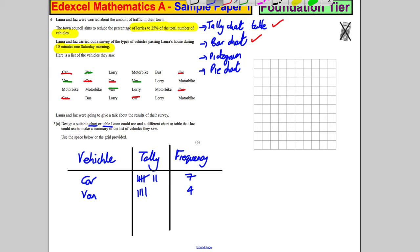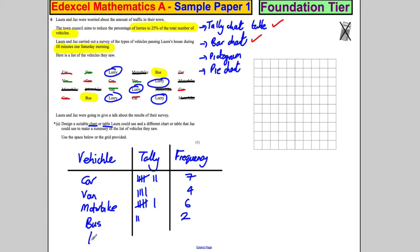We've got motorbike. So we've got one motorbike, two motorbikes, three motorbikes, four motorbikes, five motorbikes, six motorbikes. We've got six motorbikes. So one, two, three, four, five, six. And we've got a bus. So we've got one bus, two buses. So one, two, and we'd write two there. And we've got lorries. We've got one lorry, two lorries, three lorries, four lorries, and five lorries. So one, two, three, four, five. And we'd write five there.